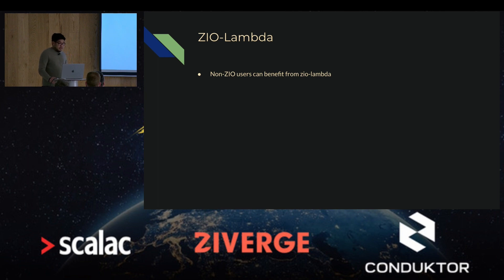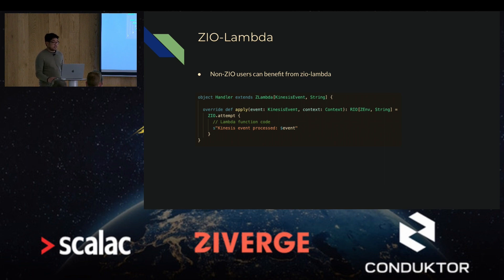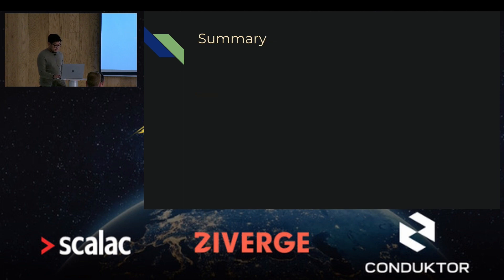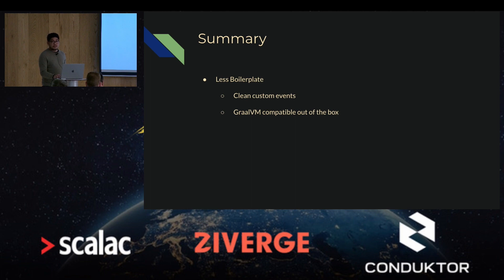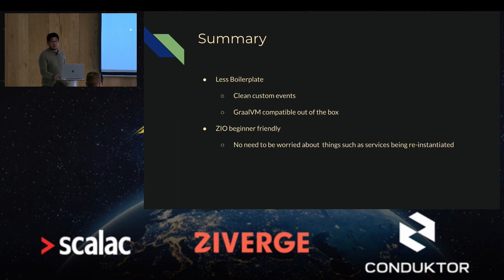The last benefit is that non-ZIO users can also benefit from ZIO Lambda, because the only thing they have to do is wrap their entire logic within a ZIO effect and they will be ready to go. In summary: using ZIO Lambda requires less boilerplate because you get to use case classes for your custom events. All Lambda functions written with ZIO Lambda are GraalVM compatible because you don't need to implement the custom runtime yourself. ZIO Lambda is ZIO beginner friendly because you don't need to worry about things such as services being reinstantiated. And non-ZIO users can also benefit from ZIO Lambda.